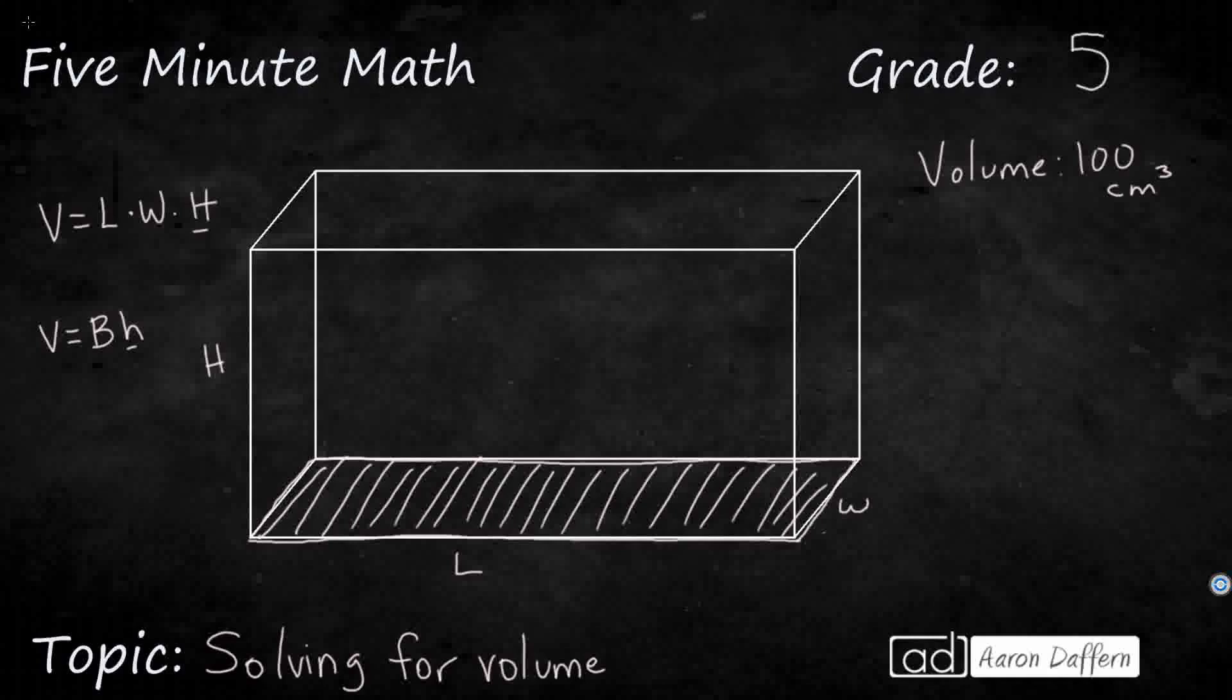So what could the dimensions be? Well, if I wanted to use this first one, think of how can we make 100, almost as if we were going to do prime factorization. Well, how could I break up 100? I could do 10 times 10. I could do 5 and 20. I could do 4 and 25. So those are just a few to think about.